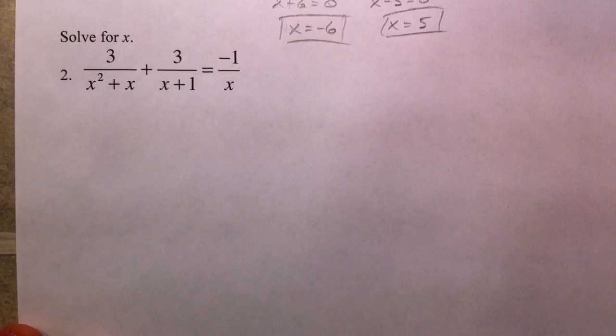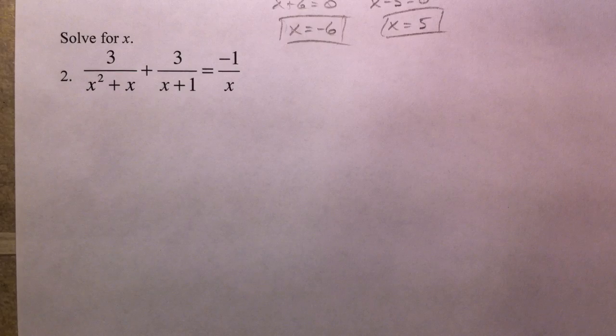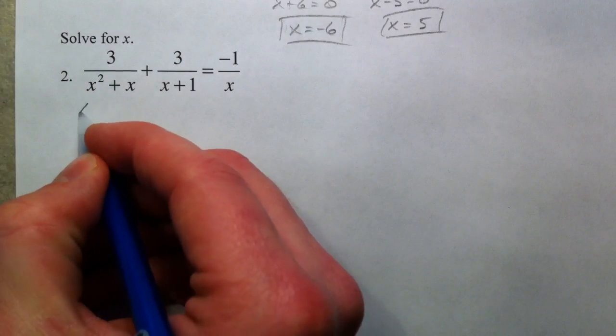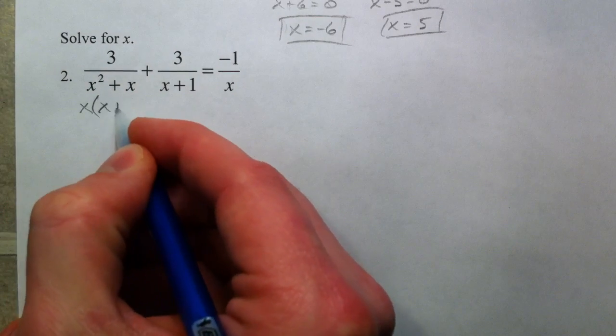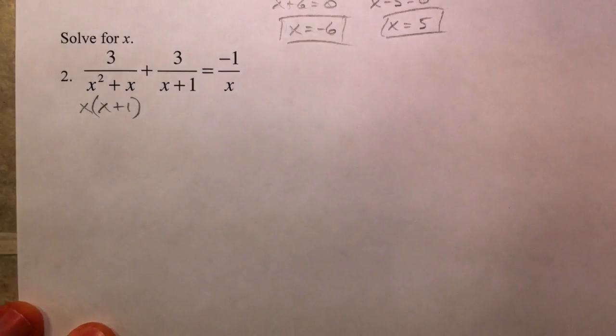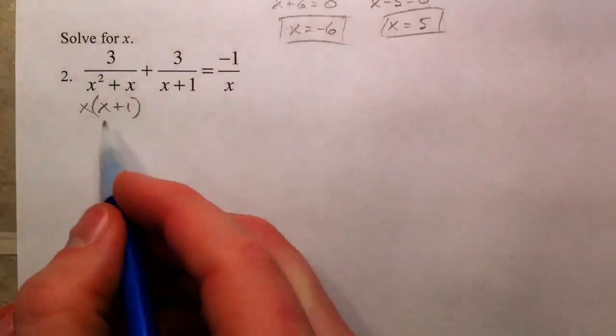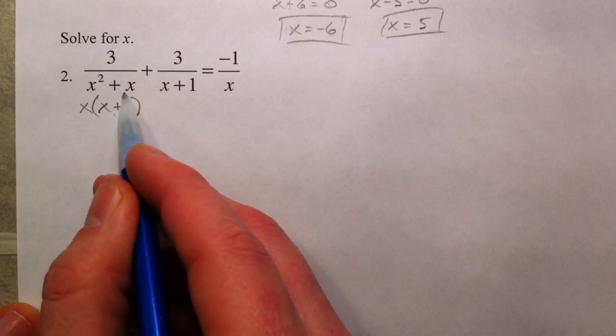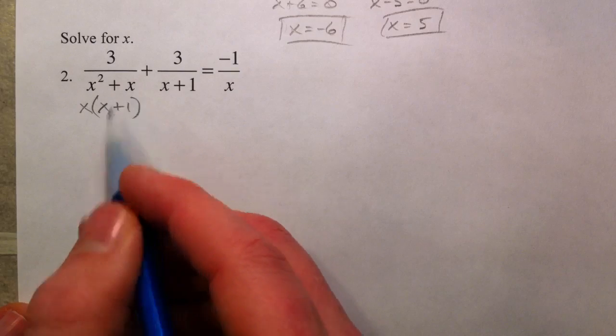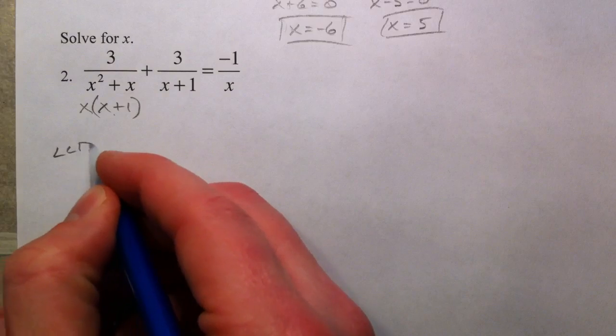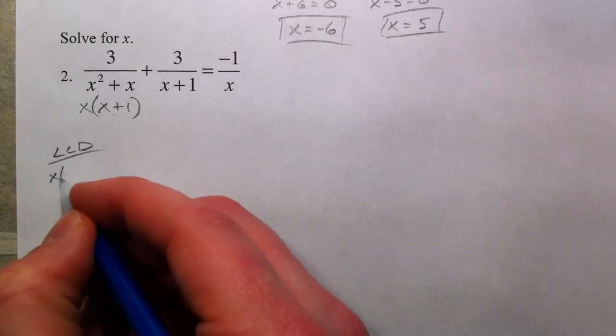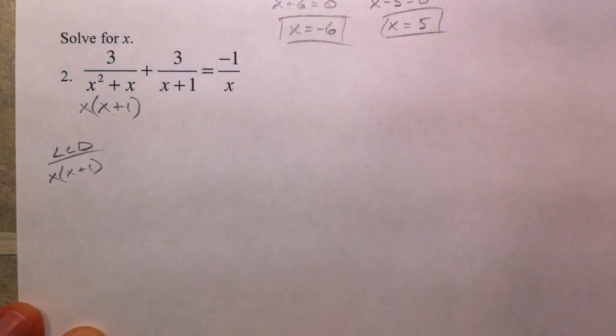Just like we did when we were combining expressions, it's very handy to factor before you get started, otherwise you're going to make it much more complicated on yourself. x times x plus 1 is this factored, because you can take an x out of both. Notice that the lowest common denominator is x times x plus 1.